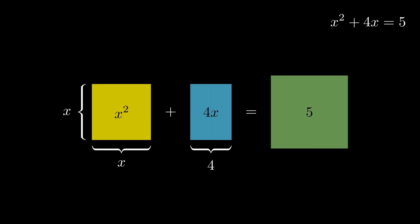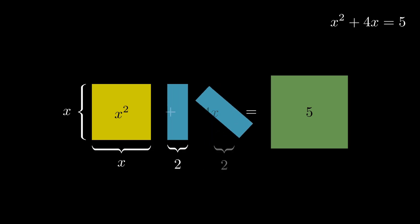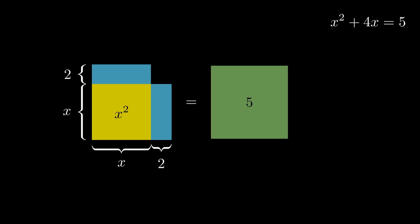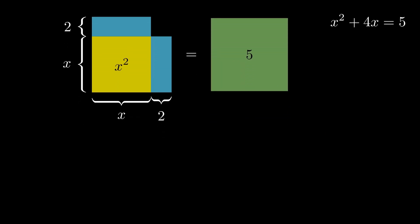Now, if we split the blue rectangle in the middle, we will get two equal rectangles with width of 2 and a height of x. We can rearrange them on the side and on top of the yellow square. The area of the shape on the left side is equal to the area of the square on the right side, which is equal to 5. Instinctually, we want to solve this by taking the yellow square plus the blue square plus the other blue square and set it equal to 5. Although it seems intuitive, this will only lead us back to square 1.